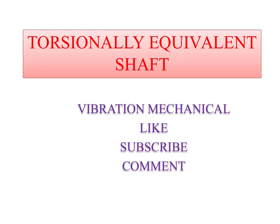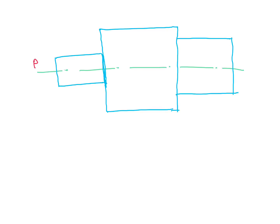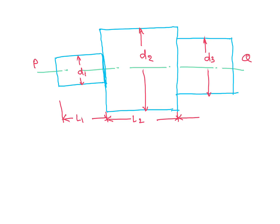Let this be a shaft PQ with varying diameters D1, D2, and D3, and lengths L1, L2, and L3. Here at the end we are applying a torque T. For this torque we will get twist: theta1 for length L1, theta2 for length L2, and theta3 for length L3, and total twist is theta.